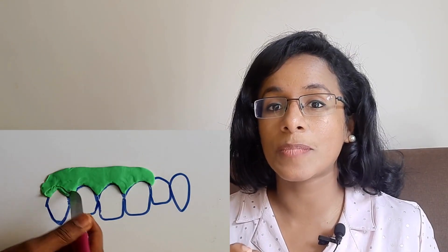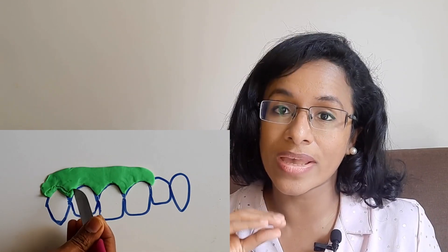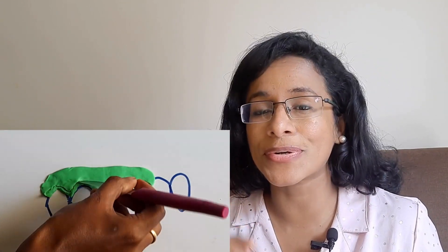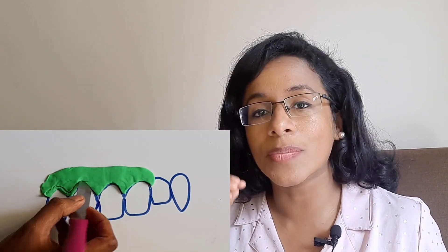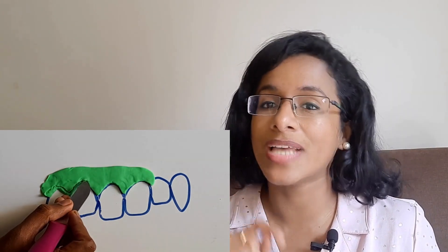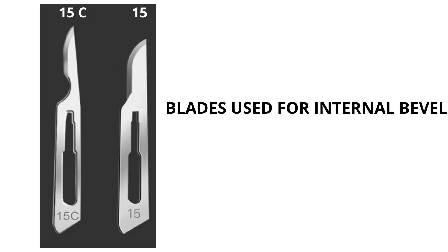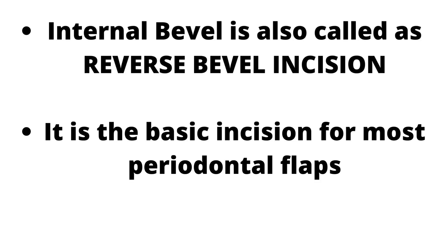This incision is placed away from the gingival margin, and you should make sure the blade reaches all the way to the alveolar crest. Both 15C and 15 blades are used. Internal bevel is also called the reverse bevel incision, and it is the basic incision for most periodontal flaps.